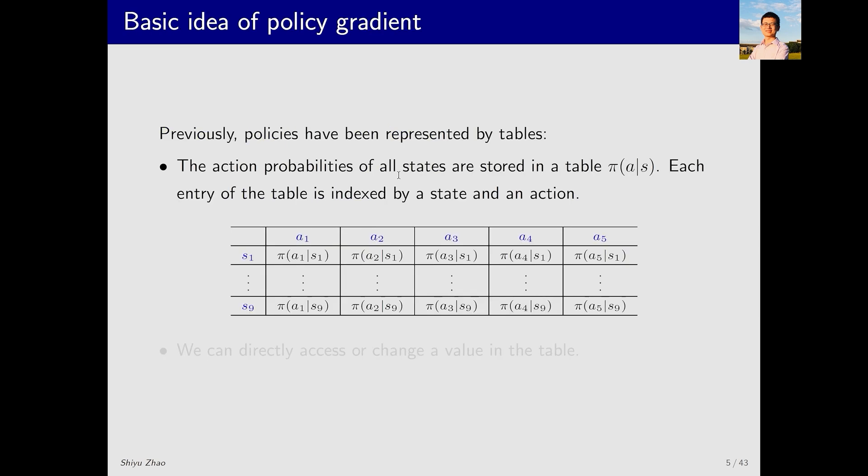Up until now, all our policies have been represented by tables. For example, I have a set of states with each state corresponding to a row. I also have a set of actions with each action corresponding to a column. If I want to find the probability of taking action a3 in a given state, I can simply look it up in the table. So all the policies we've discussed so far have been represented by tables. The basic operations of a table are quite simple. If we want to access a value or change a value, we can do so directly.